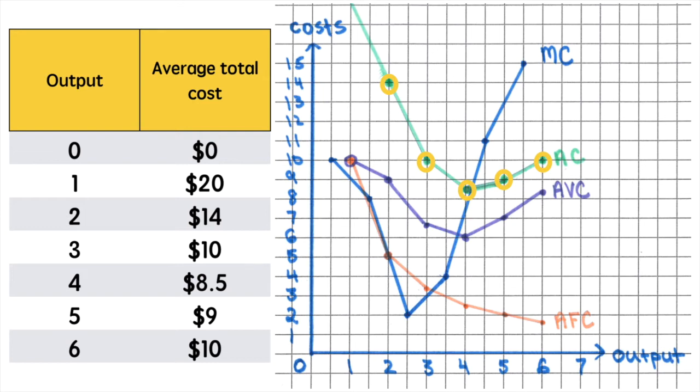The U shape of the curve is linked to the law of diminishing returns. In the short run we typically view labour as the variable factor of production and as workers specialize it becomes more efficient to produce.